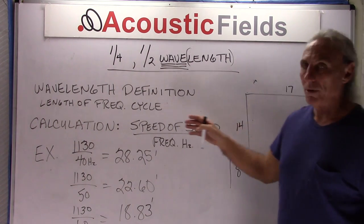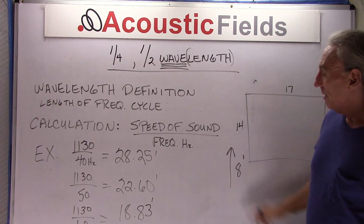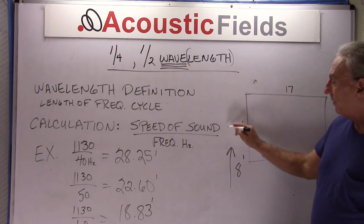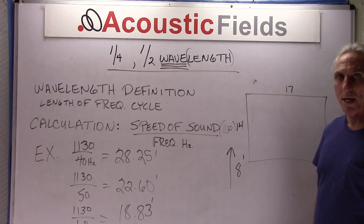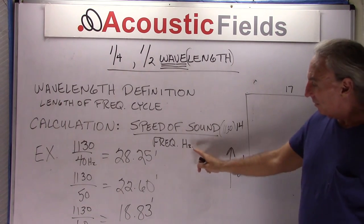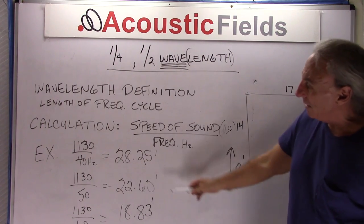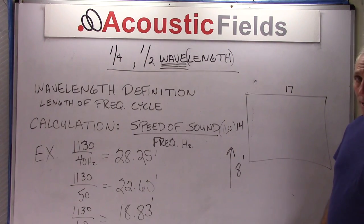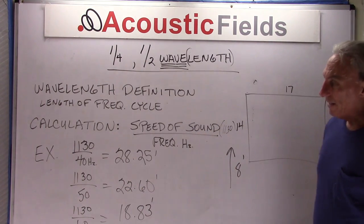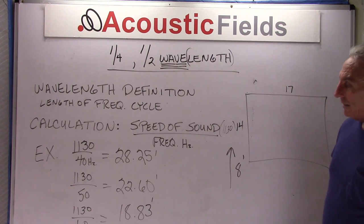So it's going to be a calculation and we're going to use the speed of sound, and for constant and general purposes we'll just use 1130 feet per second. We're going to divide it by the frequency in question. So in this example here we're going to take a 40 cycle, 40 hertz wave, divide it into the 1130 which is the constant. We're going to get a little over 28 feet.